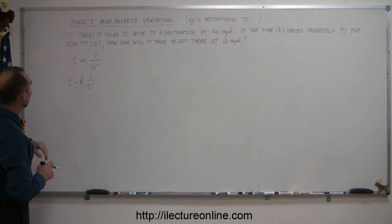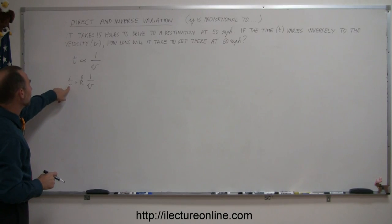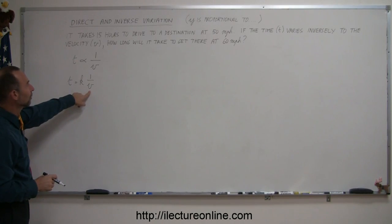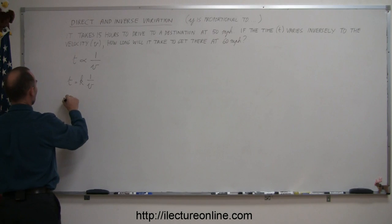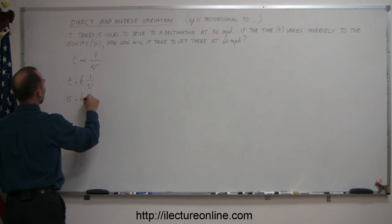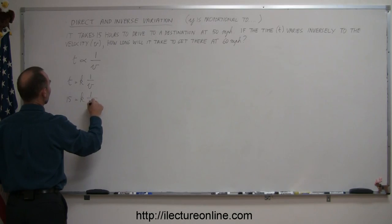All right, they tell us that it will take 15 hours, so t equals 15 when the velocity is equal to 50 miles per hour. So 15 equals k times 1 over v, which is 50.